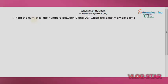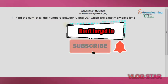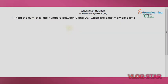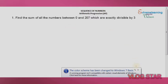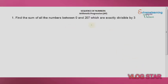Welcome to my channel. Today I'll be looking into arithmetic progression and how to solve some questions on it. The question on the board says: find the sum of all numbers between zero and 207 which are exactly divisible by three.